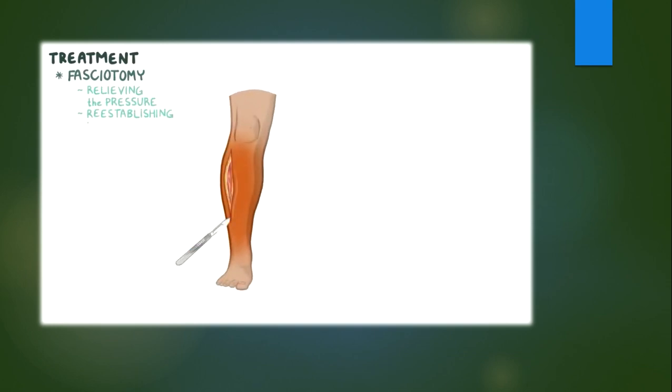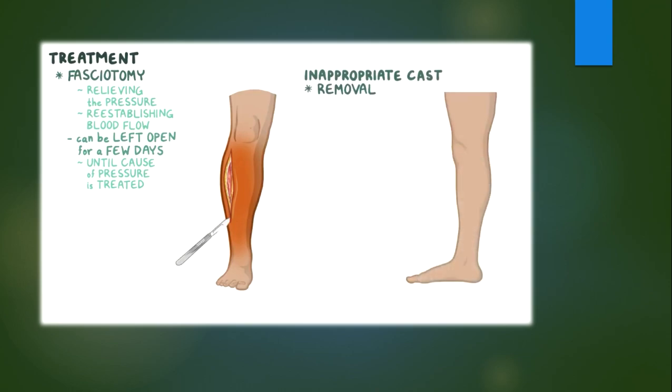Treatment is surgical and involves a procedure called fasciotomy, where the fascia is cut open, relieving the pressure and reestablishing normal blood flow. Fascia can be left open for a few days until the cause of increased pressure is treated. When the compartment syndrome is caused by some external factors like an inappropriate cast, its removal can result in spontaneous recovery and the surgery may not be needed.